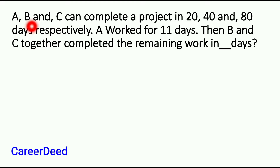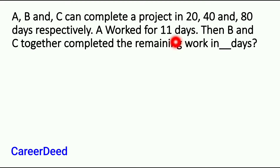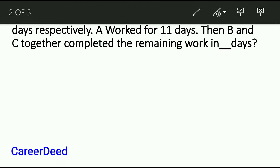Example 1. A, B and C can complete a project in 20, 40 and 80 days respectively. A worked for 11 days, then B and C together completed the remaining work in how many days?